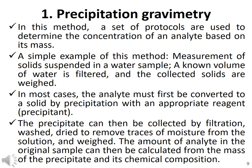In classical analytical methods, to calculate the concentration of an analyte, precipitation gravimetry is one specific tool. Precipitation gravimetric analysis includes a set of protocols used to determine the concentration of an analyte based on its mass. This is one of the most accurate and precise methods for quantitative analysis. In precipitation gravimetric analysis, the amount of analyte is calculated by measuring the mass of a pure substance containing the targeted analyte.